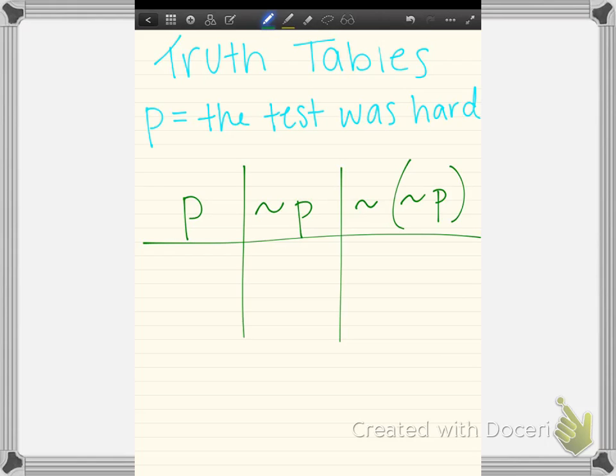P could be a true statement - the test was hard - or it could be a false statement that the test was not hard. Those are the only two options: it's either true or it's false. Now, we've already mentioned what a negation is. Negation is just the opposite of whatever P is. So if P is true, then not P is going to have to be false. And if P is false, then not P will be true.